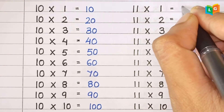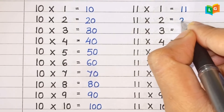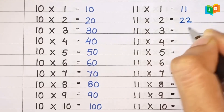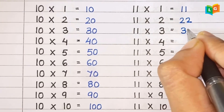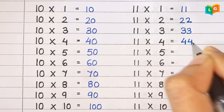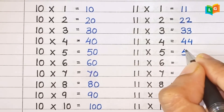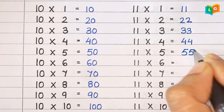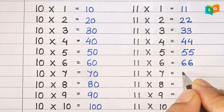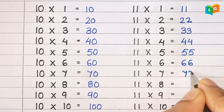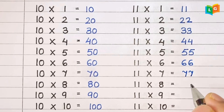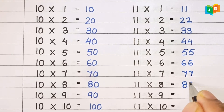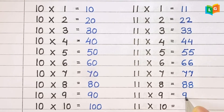Now let's see table of 11. 11 1s are 11, 11 2s are 22, 11 3s are 33, 11 4s are 44, 11 5s are 55, 11 6s are 66, 11 7s are 77, 11 8s are 88, 11 9s are 99, 11 10s are 110.